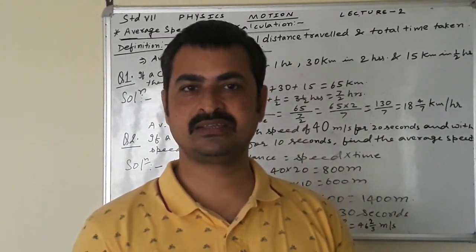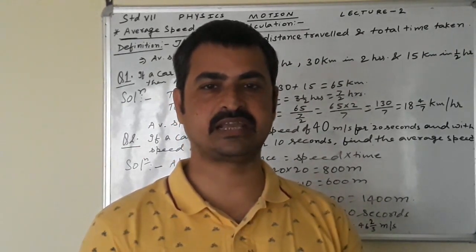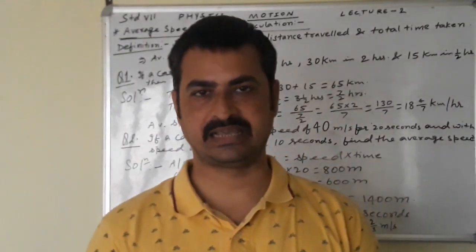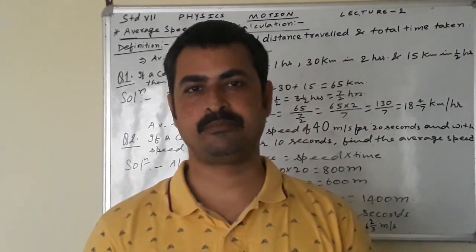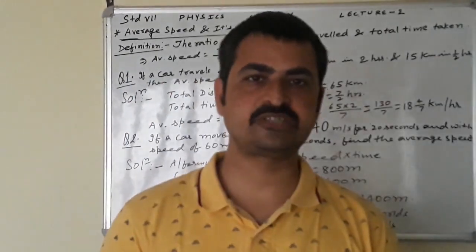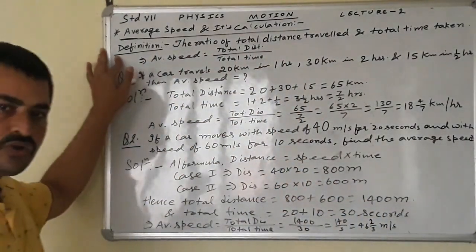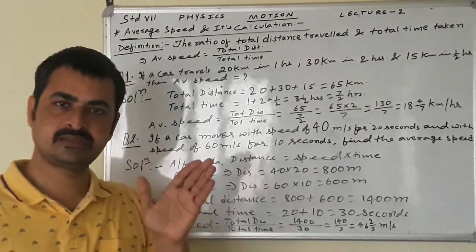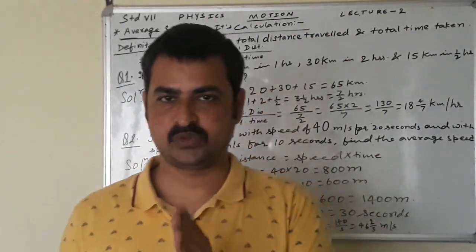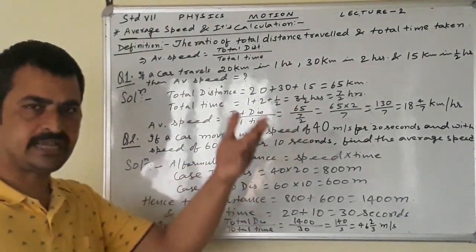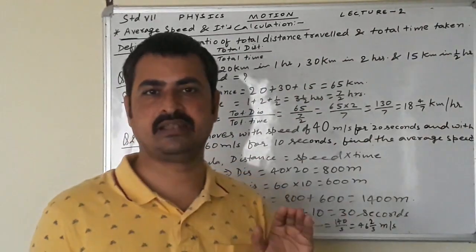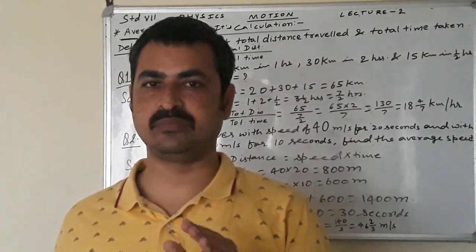If there is no traffic, very less time is taken. If there is traffic on the road, much more time is taken. Both speeds are not the same — one will be smaller, another will be greater. So we need to find the average speed. Its expression is the ratio of total distance travelled — the distance between destination A and destination B. Total distance is fixed; speed or time varies. If total distance travelled is divided by total time taken, then average speed of the body is calculated.